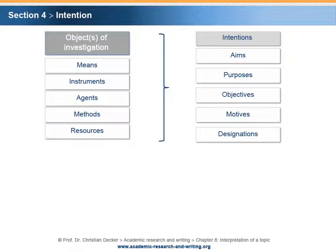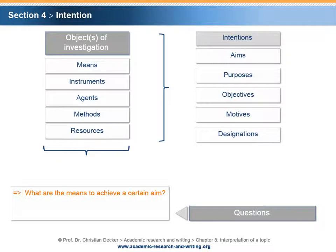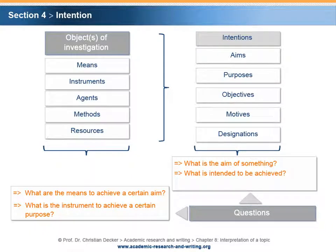There are two ways to look at the problem. First, if an intention is already available, the task can be to investigate a matching object. Possible questions: what are the means to achieve a certain aim? What is the instrument to achieve a certain purpose? Second, if an object is already available, the task can be to investigate its intention. Possible questions: what is the aim of something? What is intended to be achieved? Why is something done in a special way?